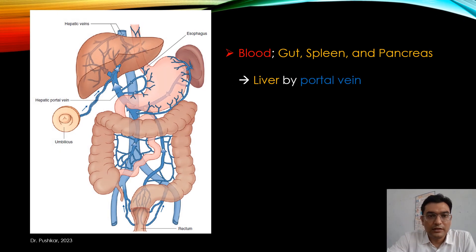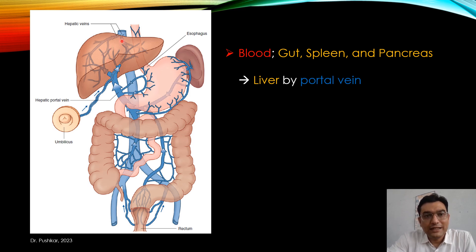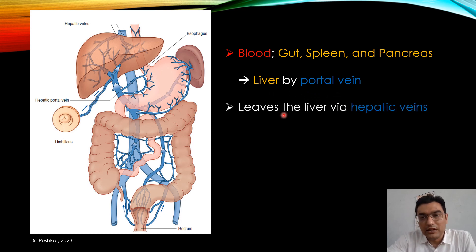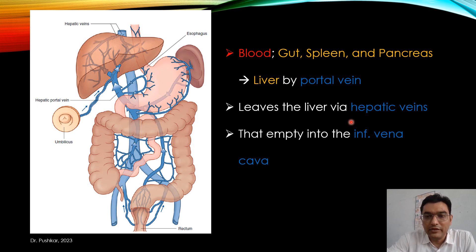All the blood from the gut — stomach, small intestine, and large intestine — and from the pancreas and the spleen reaches the liver by way of the portal vein. It then leaves the liver via hepatic veins, which empty into the inferior vena cava. This whole circulation is known as splanchnic circulation.